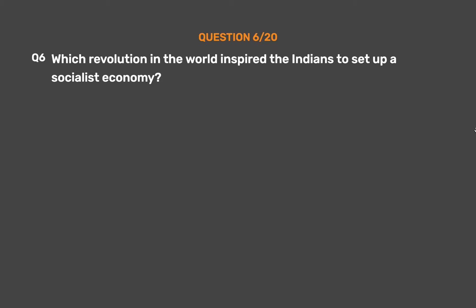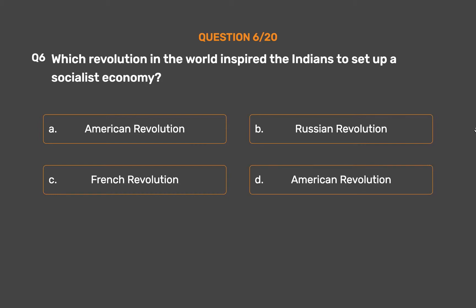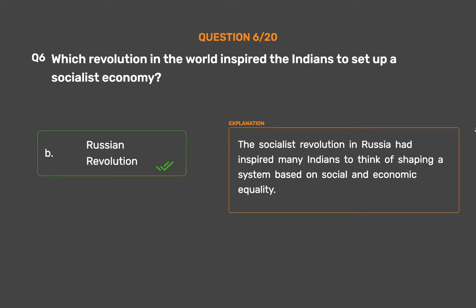Question 6: Which revolution in the world inspired the Indians to set up a socialist economy? Option A: American Revolution. Option B: Russian Revolution. Option C: French Revolution. Option D: American Revolution. The correct answer is Option B: Russian Revolution. The socialist revolution in Russia had inspired many Indians to think of shaping a system based on social and economic equality.